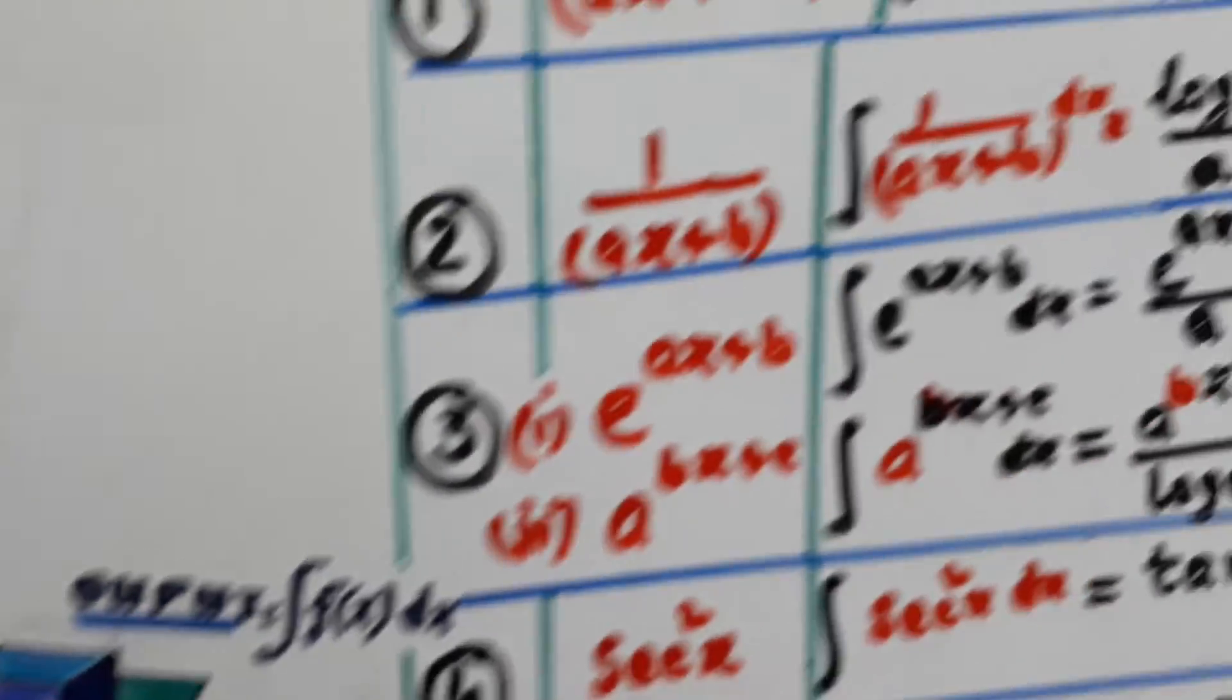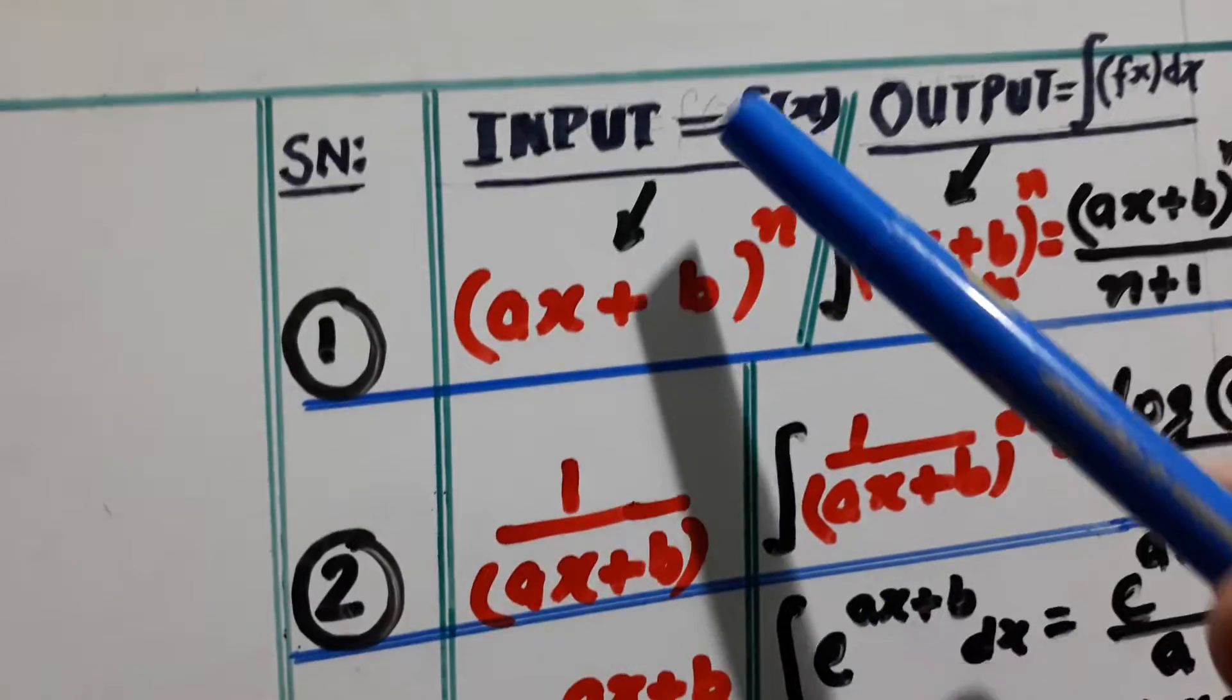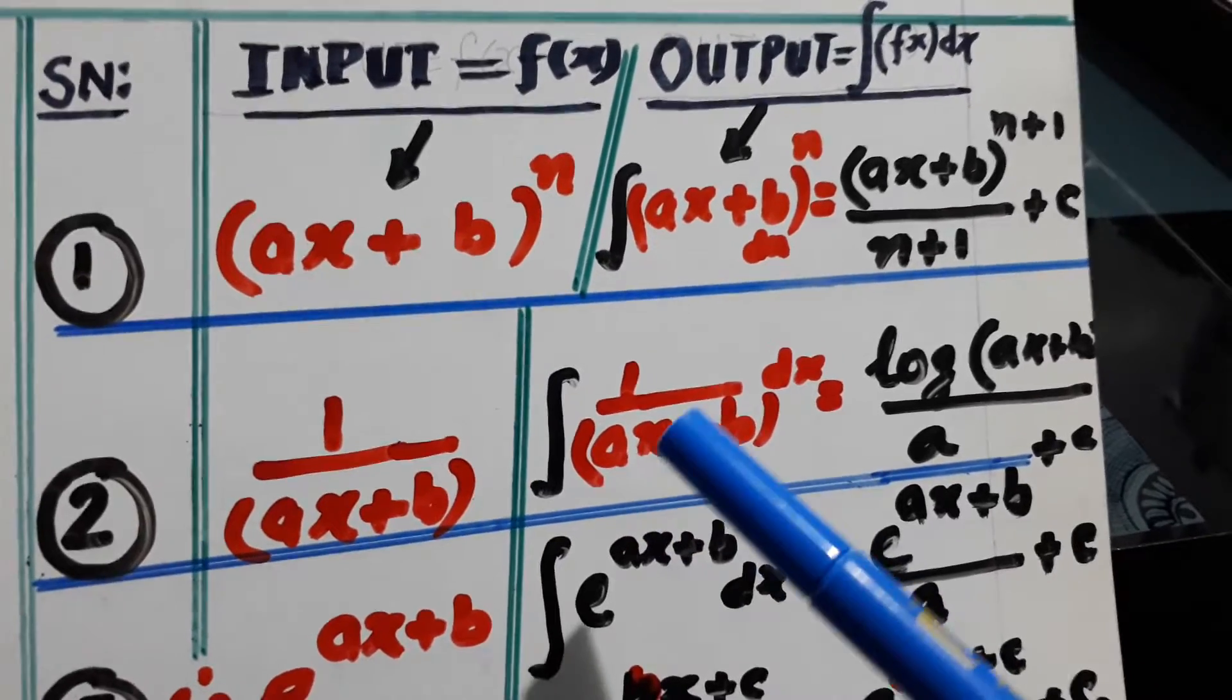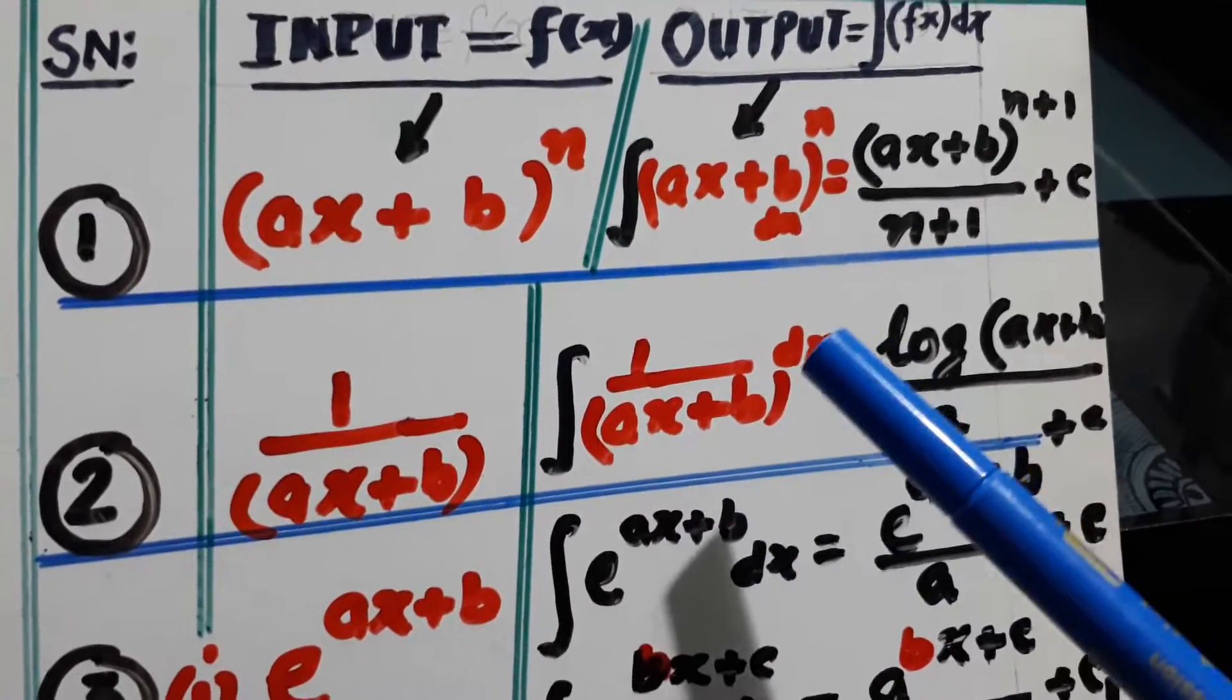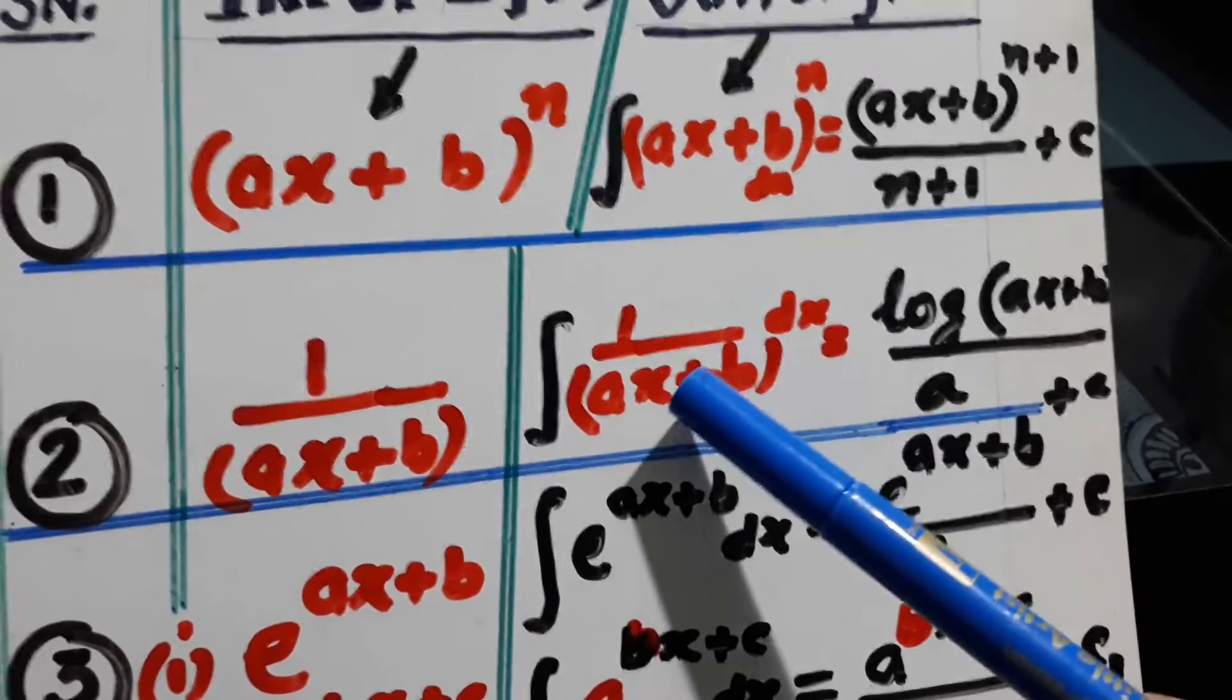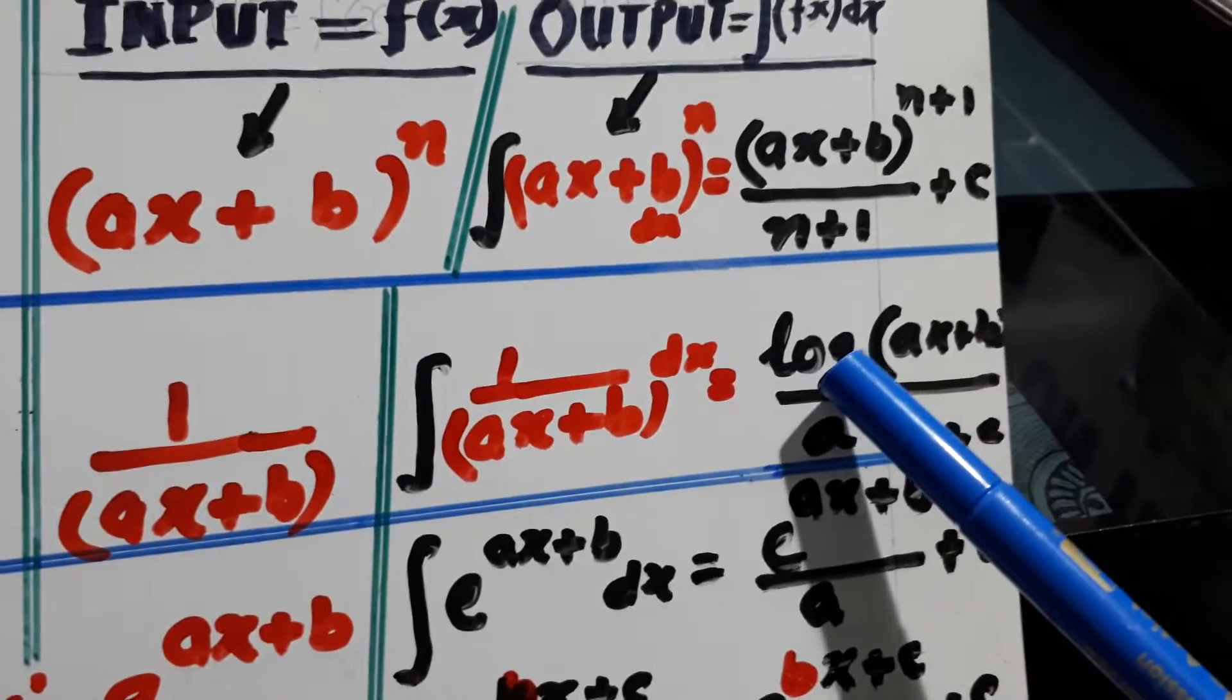Now our input is going in: 1 over (ax+b). This is the input. And output is integration of 1 over (ax+b) dx. It is of the shape 1 over x. The answer is log x.